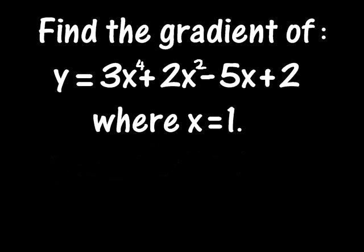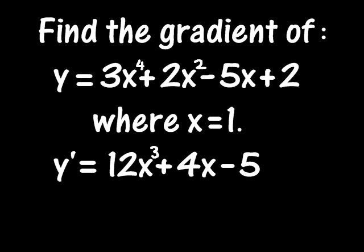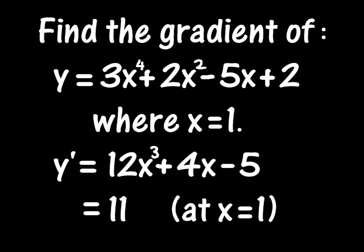To find the gradient of the function at the point where x is 1, first differentiate to get y-dash, the gradient function, then substitute in the value x equals 1. This gives 11, which is the gradient of the graph when x is 1.